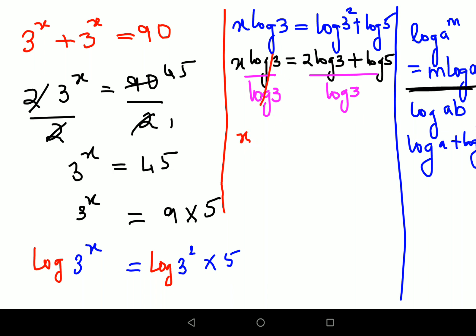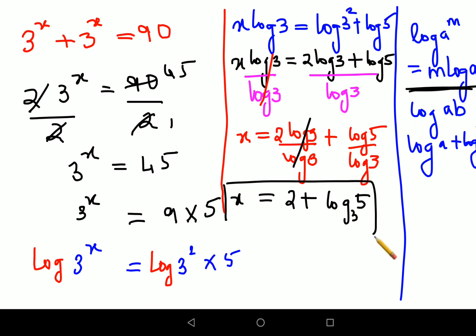So here we can cancel this, giving x = (2 log 3)/(log 3) + (log 5)/(log 3). Now we can cancel this and we will get this as 2 + log 5 to the base 3. This is your value for x.